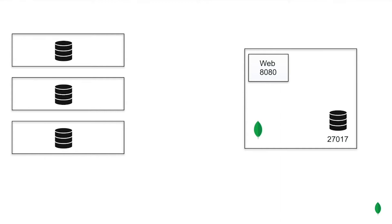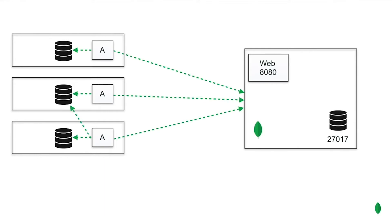In order to do so we need to install the automation agent on each server. The automation agent is the main process used by Ops Manager to interact directly with our MongoDB processes. Each agent, in addition to being able to manage its local MongoDB process, also needs to be able to talk to any other MongoDB instance in the replica set. Another agent used by Ops Manager is the monitoring agent, which allows us to get useful key performance indicators of the servers running our replica set.